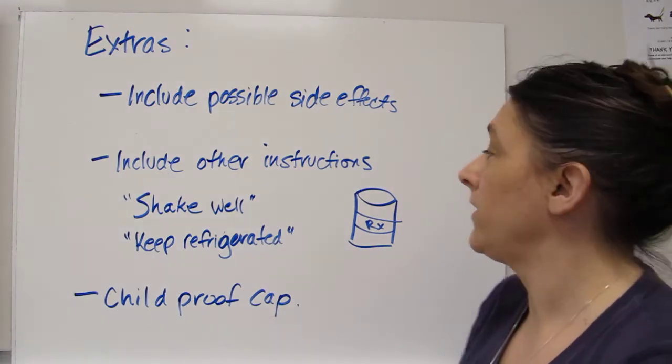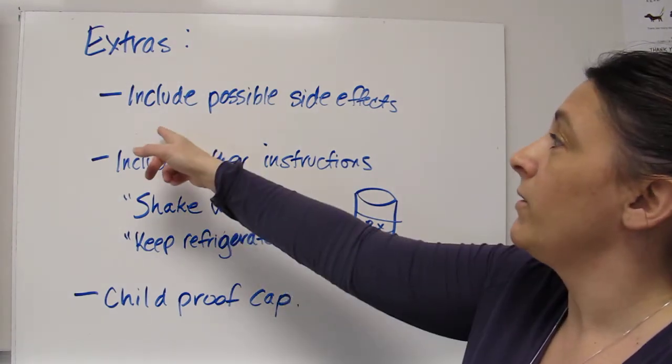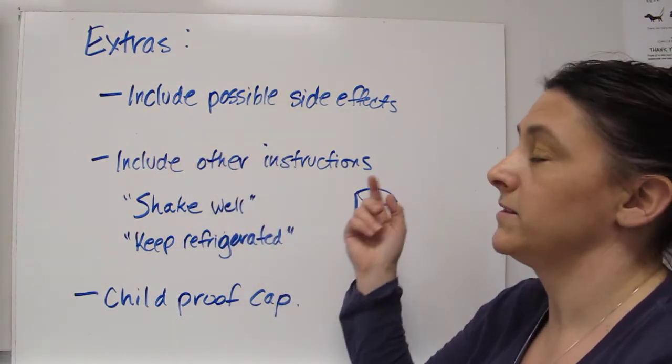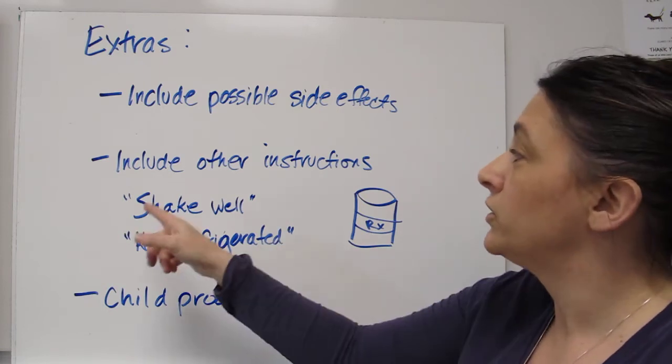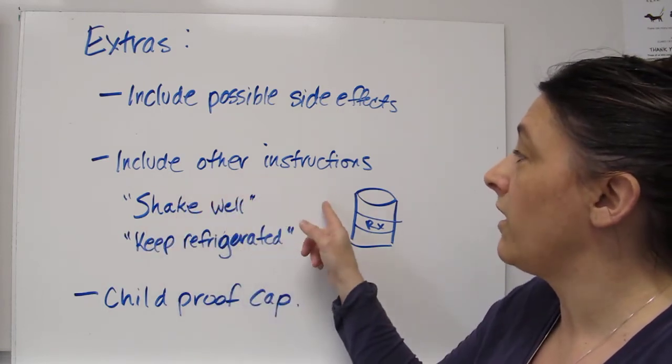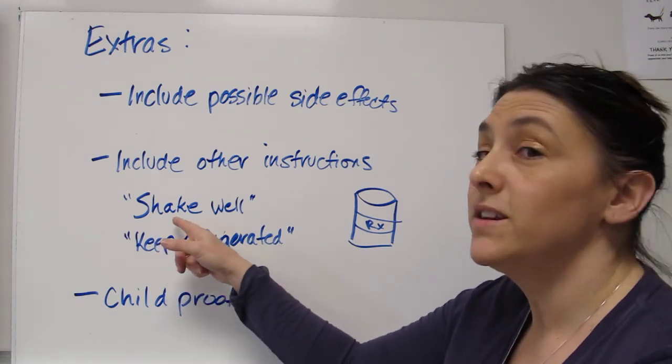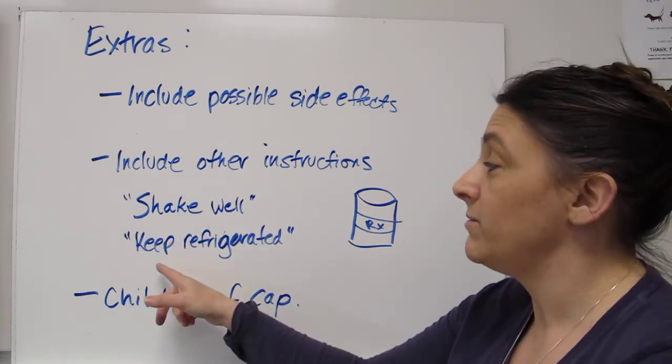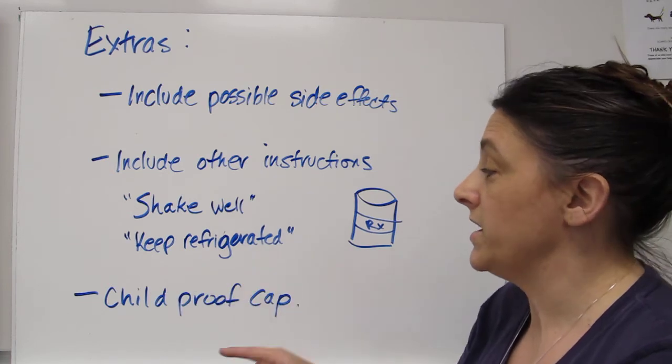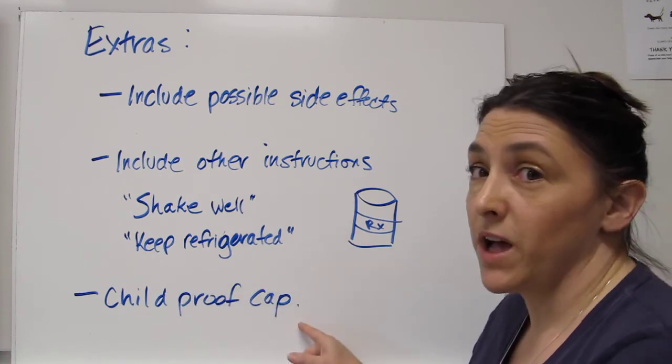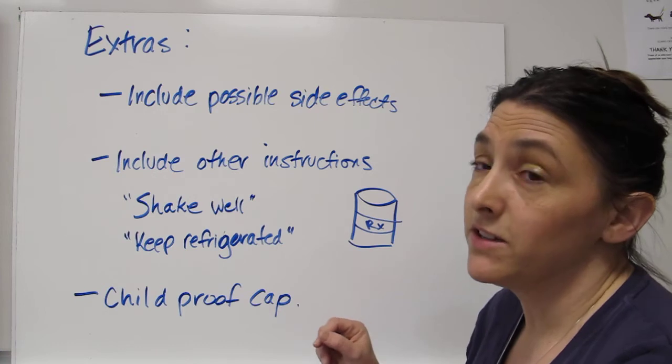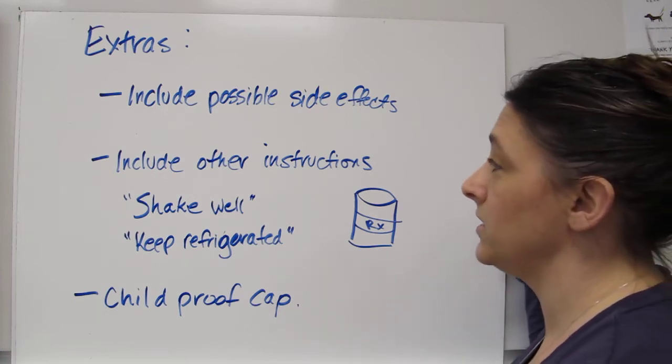Some extras to include on the prescription label, you may want to include possible side effects, may cause vomiting. You certainly want to make sure you include other instructions. If this medication is a suspension, they need to shake it well before they give it. It doesn't need to be kept in the refrigerator. A child-proof cap is a must because kids get into veterinary medicines just like they get into human medicine.